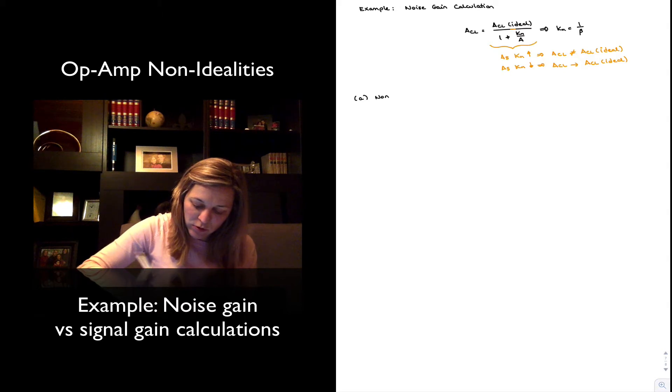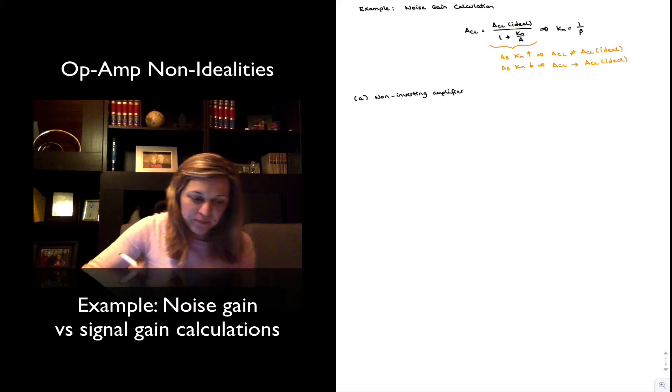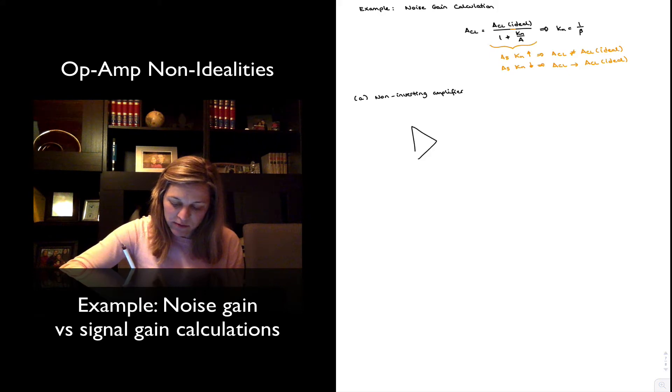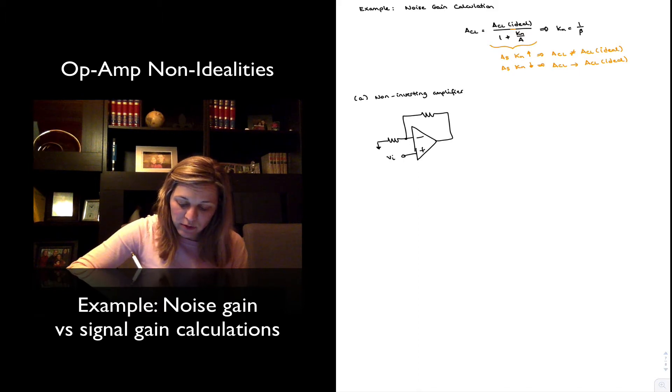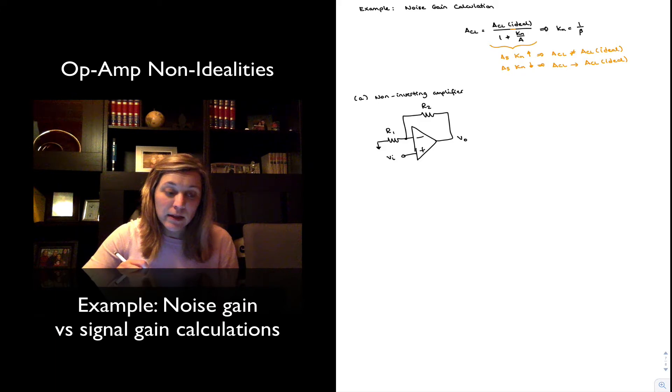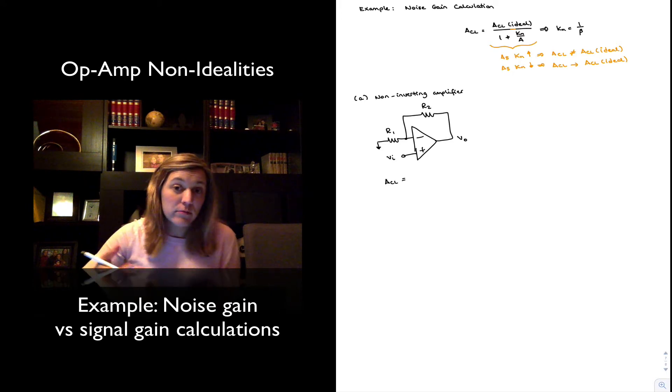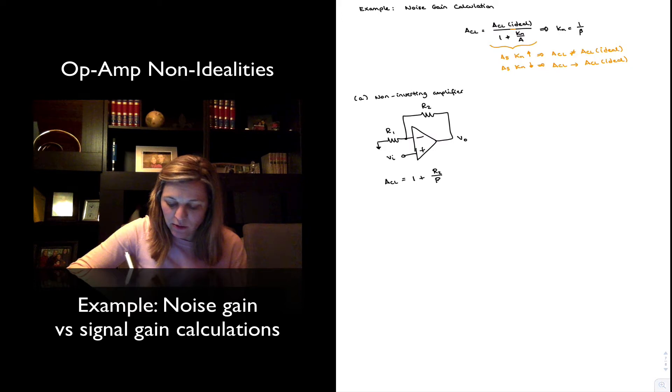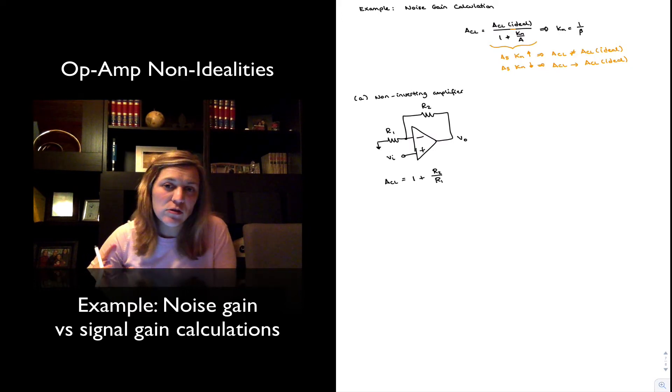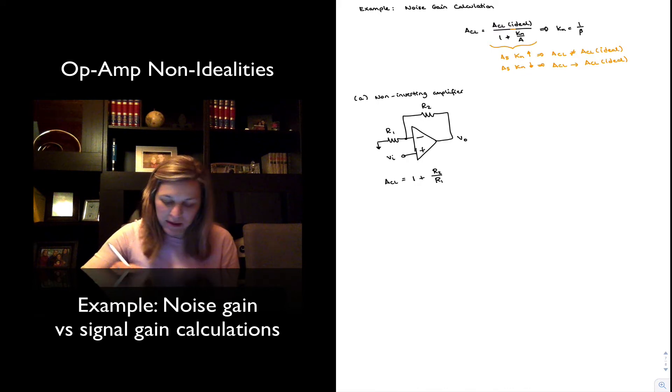Let's take a look at the non-inverting amplifier, and we're going to be calculating its noise gain as well as its actual signal gain. A non-inverting amplifier consists of an op-amp with an input resistor and a feedback resistor, where the signal is applied to the non-inverting input terminal. I'm going to call this R1 and R2, and this one's going to be my Vout. My ideal closed-loop gain for a non-inverting amplifier ACL, if the open-loop gain is infinity, is 1 plus R2 divided by R1.